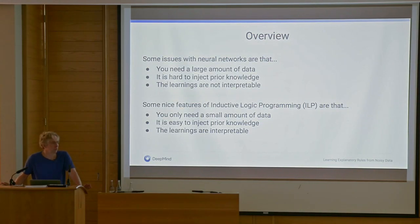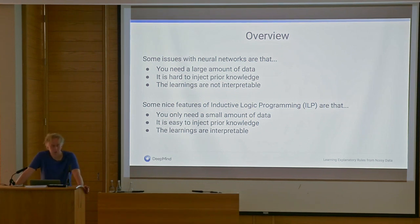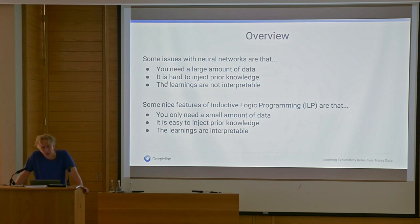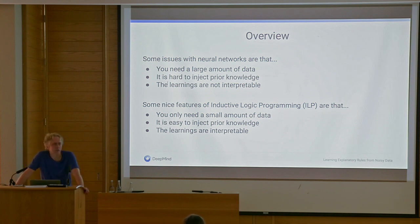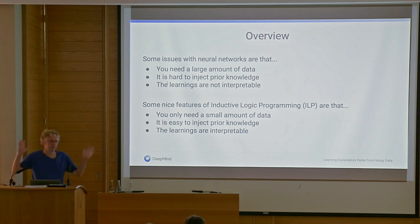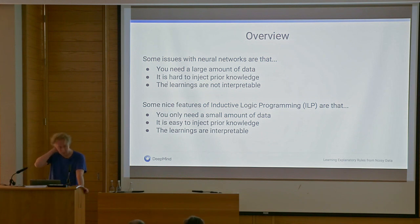Neural networks are amazing machines, but they have some issues to do with how much training data they need. A neural network often needs huge amounts of training data before it can learn. It's often hard to inject prior knowledge into them, and often the thing they've learned is not interpretable. All you've got at the end is this massive tensor of floating point numbers — we don't understand what it means. There are very smart people working on all these issues, but the issues are there.